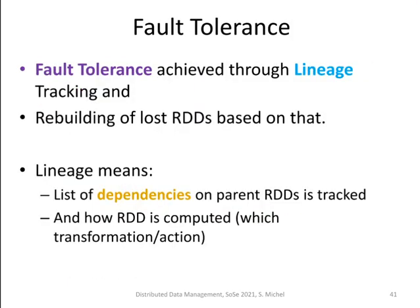Spark also offers fault tolerance, achieved through so-called lineage tracking. Lineage describes where the data comes from, and if an RDD is lost, it can be reconstructed based on the lineage information. The lineage contains the dependencies of the RDDs — how one RDD is derived from its parent and grandparent RDDs — so you can always call those functions again and recompute the lost RDD.